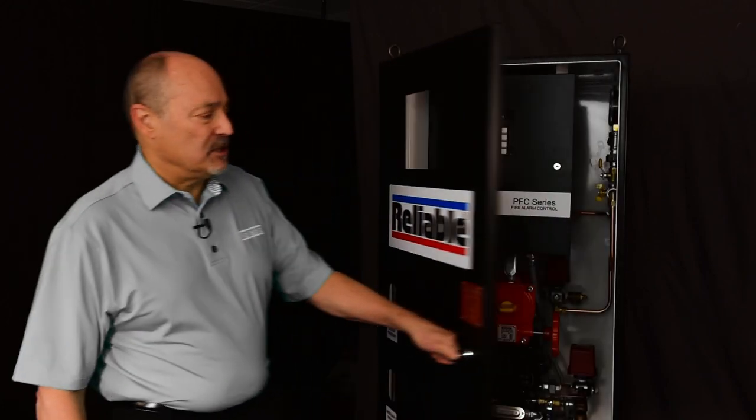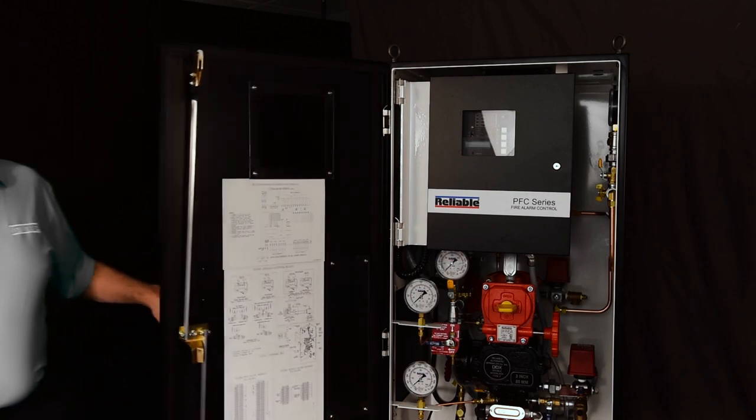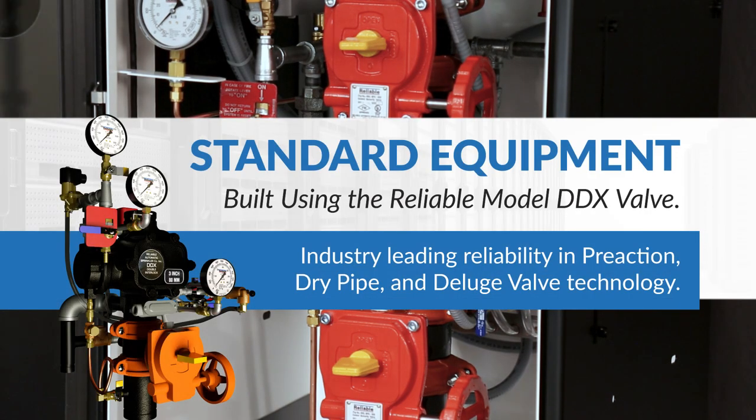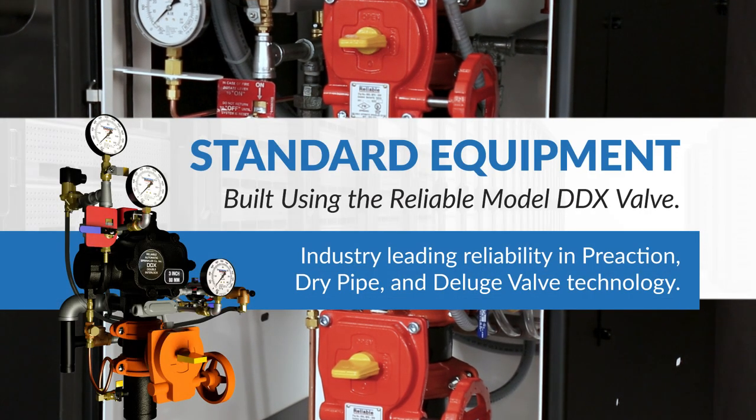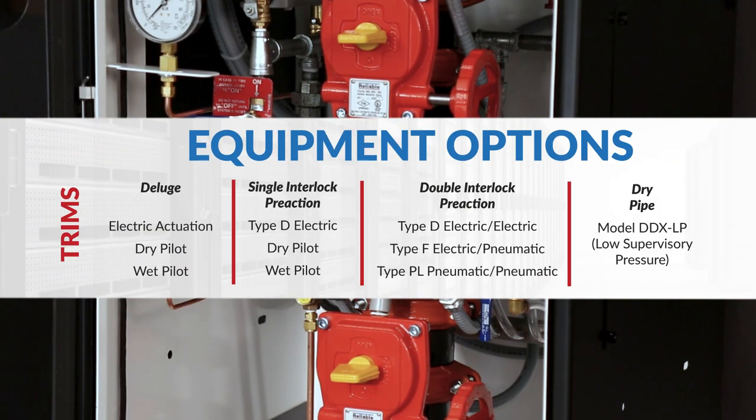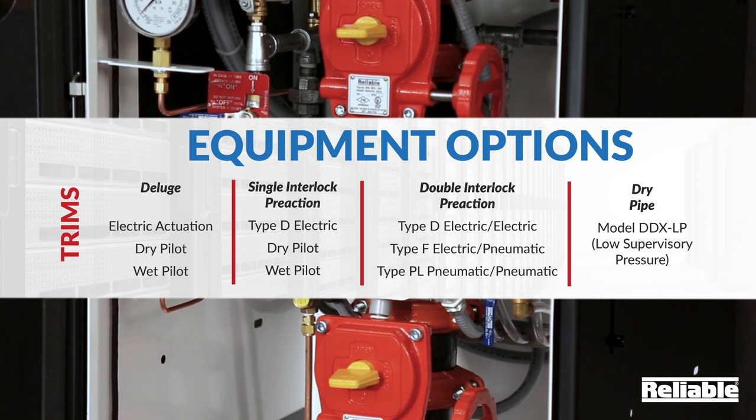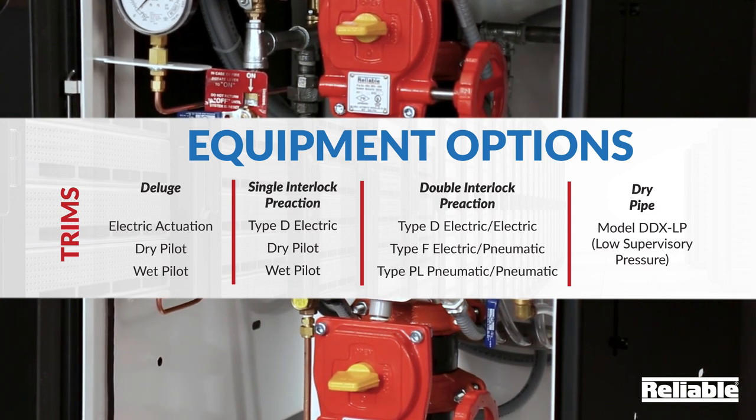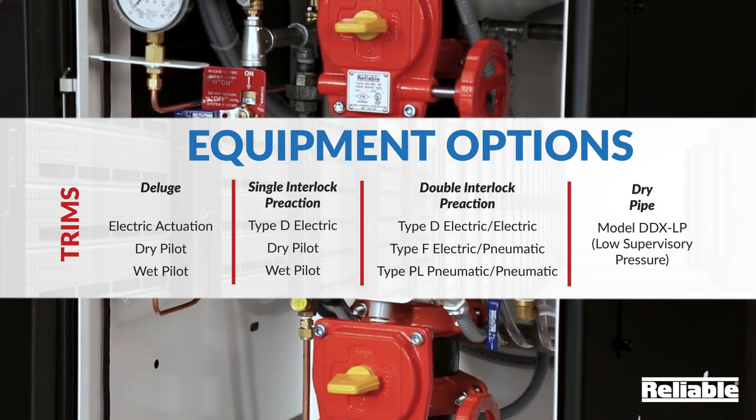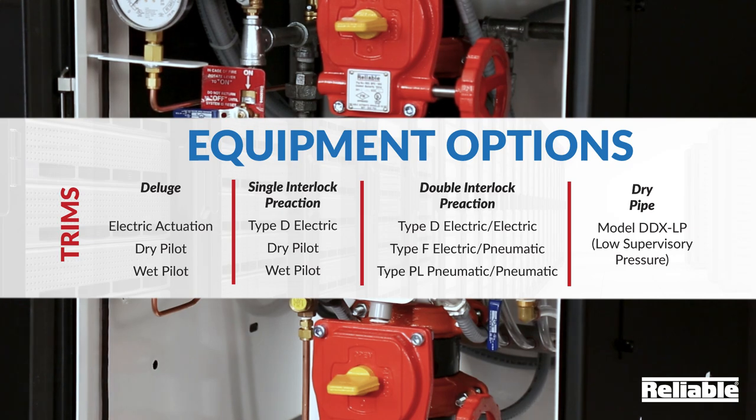At the heart of every prepack is the model DDX latching clapper valve. Available in sizes ranging from two inch to eight inch, the reliable DDX valve can be trimmed into ten different systems: three types of deluge, three types of single interlock pre-action, three types of double interlock pre-action, and finally a low-pressure dry pipe system.